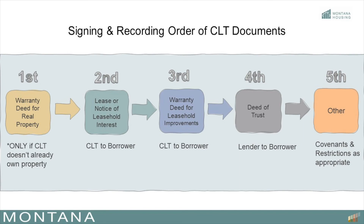Next, the warranty deed to leasehold improvements comes next as it transfers the house or improvements themselves to the borrower. The deed of trust is next, which encompasses both parcels of the land and is the security interest document for the property. And finally, any other appropriate documents pertaining to the CLT, whether their covenants or restrictions that are permitted under the MBOH community land trust rider, etc., will be recorded last.